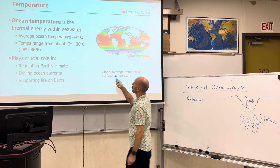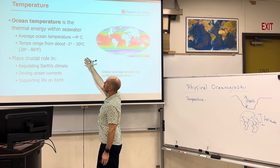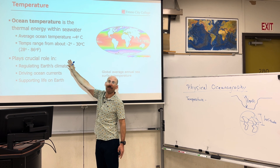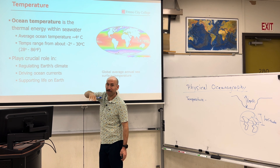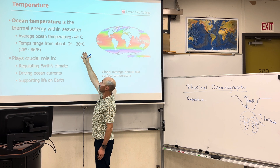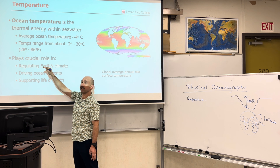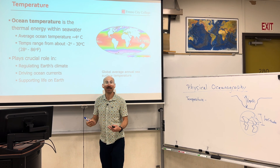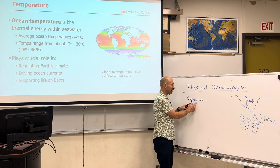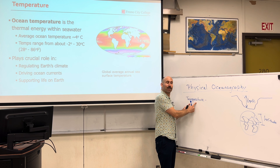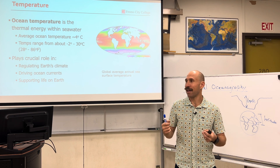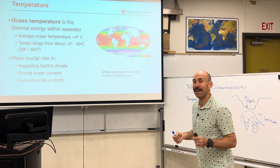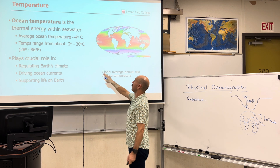Temperature in the oceans has an average of about four degrees Celsius, but it can be pretty cold — minus two degrees. You might wonder: wouldn't the ocean freeze? Well, there's salt in the oceans, which lowers the freezing temperature. It can go all the way up to 30 degrees, which is very hot. Ocean temperature buffers Earth's climate, drives ocean currents, and supports all life on Earth. Ocean temperature plays a key role.